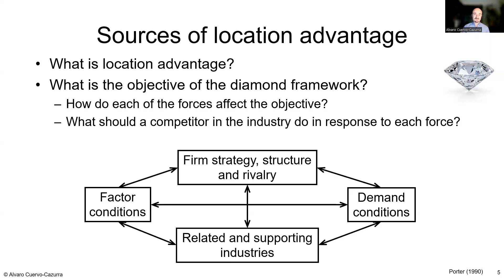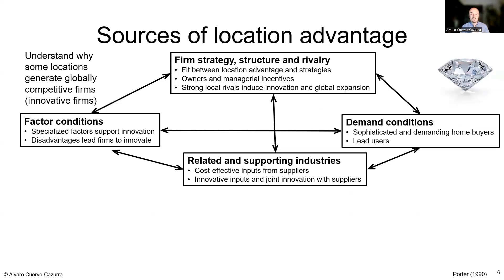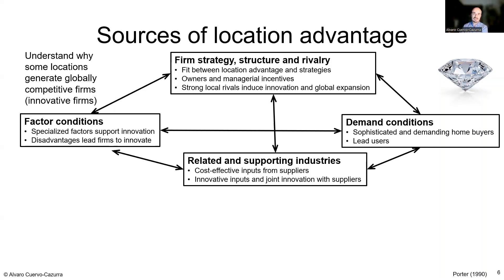Let's go deeper into each force. Factor conditions: certain specialists in the country enable companies to access better inputs, allowing them to specialize and improve. Demand conditions: sophisticated and demanding local consumers push companies to do things better, driving innovation. Related and supporting industries: companies can rely on highly innovative firms in adjacent industries — using their machinery and services — allowing each company to concentrate on what it does best while relying on other excellent suppliers.